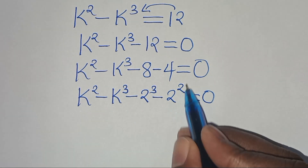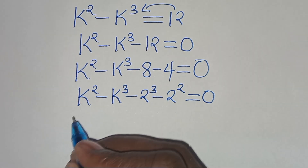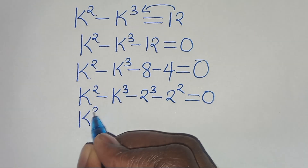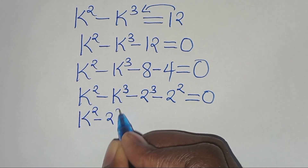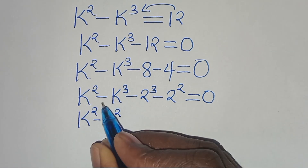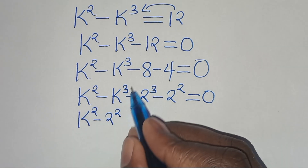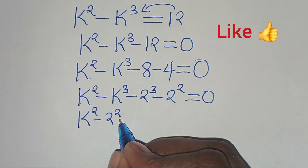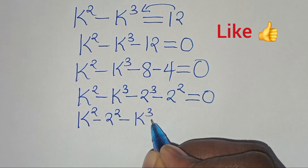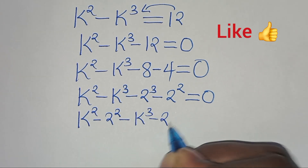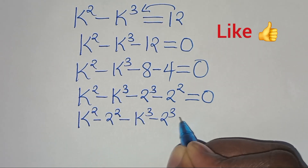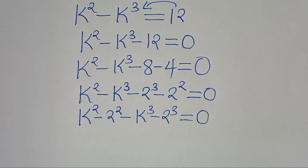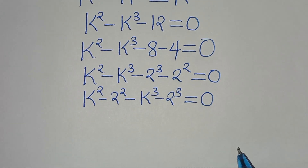We have k squared and 2 squared here, so we write this as k squared minus 2 squared, then minus k cubed minus 2 cubed, all equal to 0.